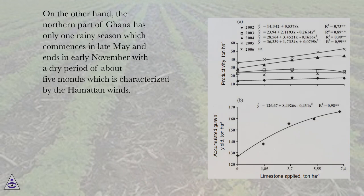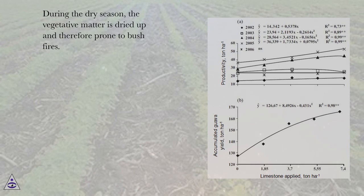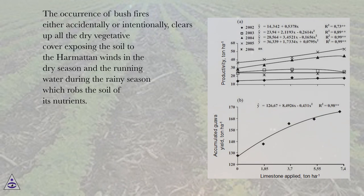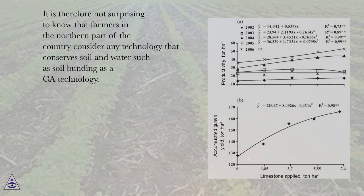On the other hand, the northern part of Ghana has only one rainy season which commences in late May and ends in early November, with a dry period of about five months characterized by harmattan winds. During the dry season, vegetative matter is dried up and therefore prone to bushfires. The occurrence of bushfires, either accidentally or intentionally, clears all dry vegetative cover, exposing the soil to harmattan winds in the dry season and running water during the rainy season, robbing the soil of its nutrients. It is therefore not surprising that farmers in the north consider any technology that conserves soil and water, such as soil blending, as a CA technology.